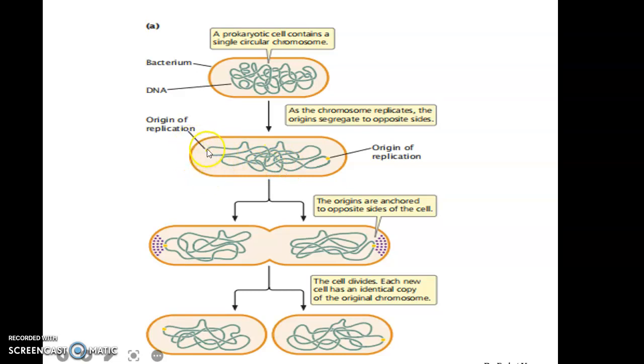As you can see, after replication one origin of replication is towards this end and another origin is towards the other end. These origins anchor to opposite sides of the cell.